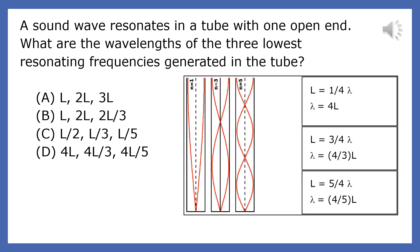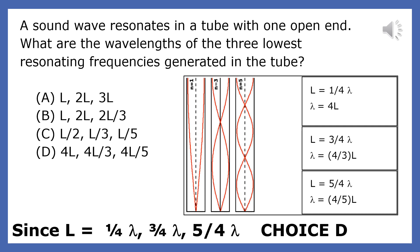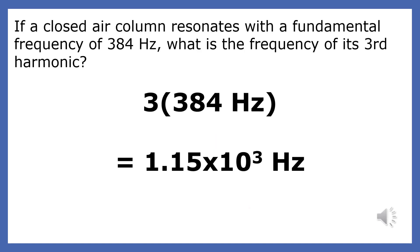A sound wave resonates in a tube with one open end. What are the wavelengths of the three lowest resonating frequencies generated in this tube? Since the lowest frequency will produce a quarter of a wavelength, the wavelength will be 4L — right away we see it's choice D. If a closed air column resonates with a fundamental frequency of 384 Hz, what is the frequency of the third harmonic? Since the third harmonic is three times the fundamental, we simply take 384 and multiply it by three.